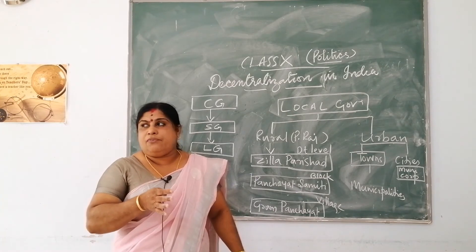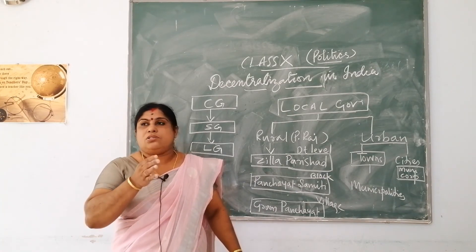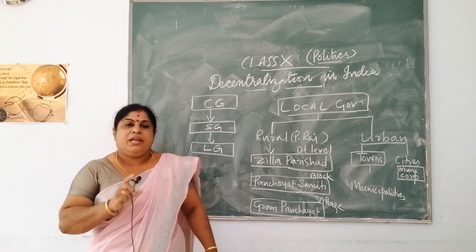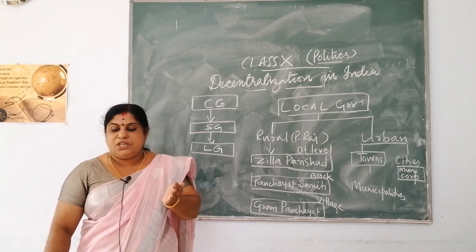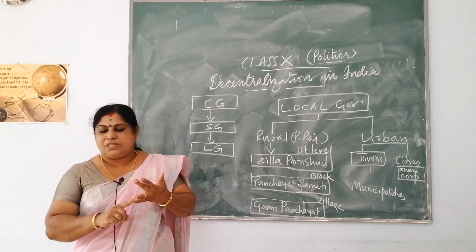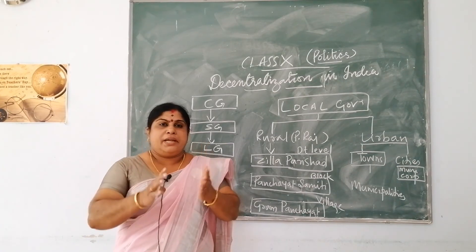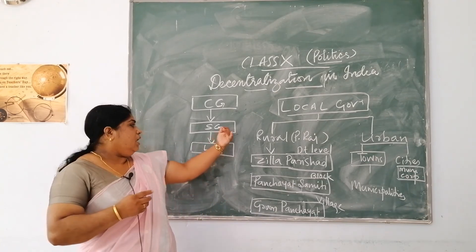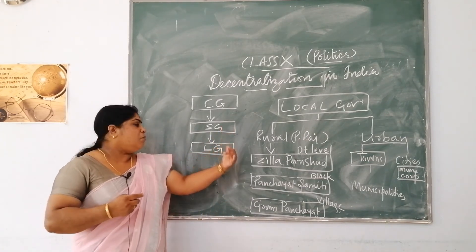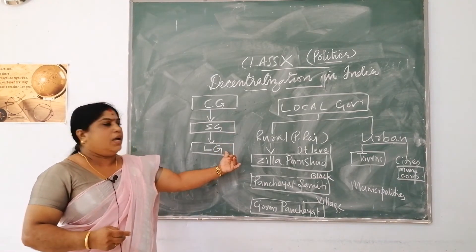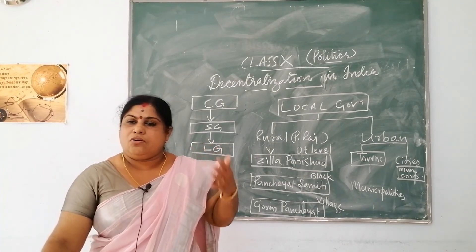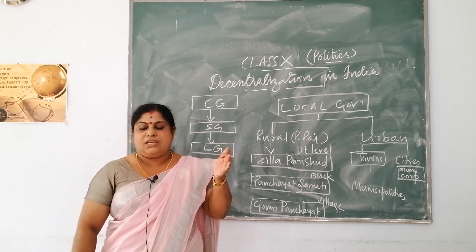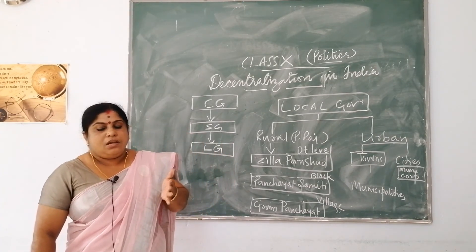Under the 1992 amendment, it was made compulsory that every section of society should be given importance. Seats were specially reserved for Scheduled Castes, Scheduled Tribes, as well as OBCs. It was also mandatory that one-third of the seats were reserved for women. The state governments were required to share some of their powers and revenue with local governments, and local governments were given authority to spend money on the development of villages, towns, and cities.